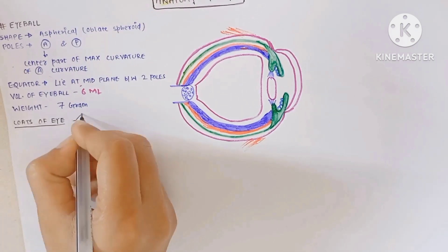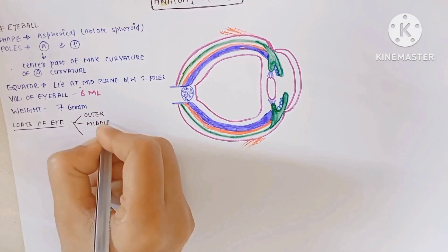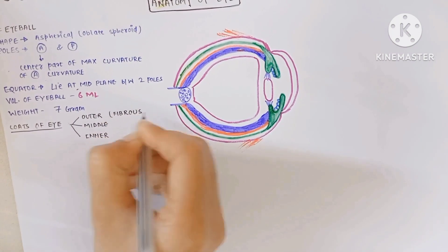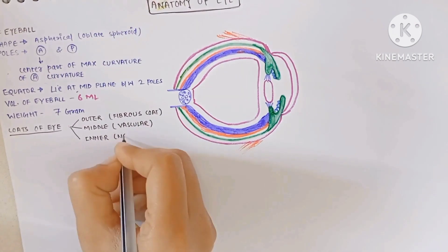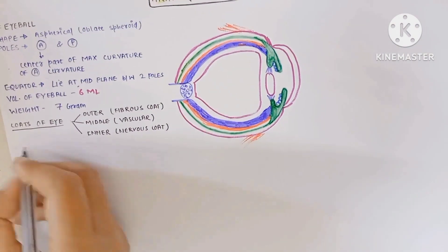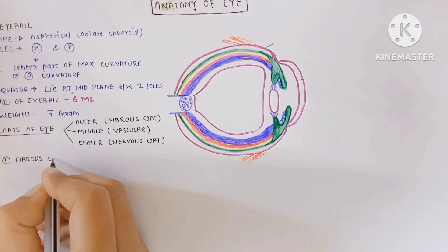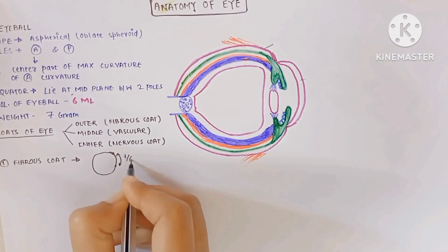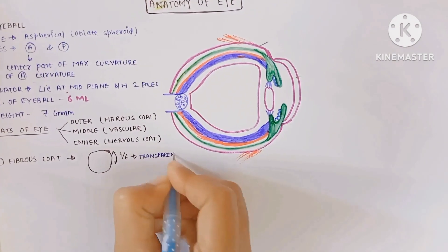The outer coat is fibrous, middle is vascular, inner is nervous coat. The first is the fibrous coat. The fibrous coat has the anterior one-sixth part of the eyeball which is transparent, called the cornea. The posterior five-sixths part is opaque, which is the sclera.